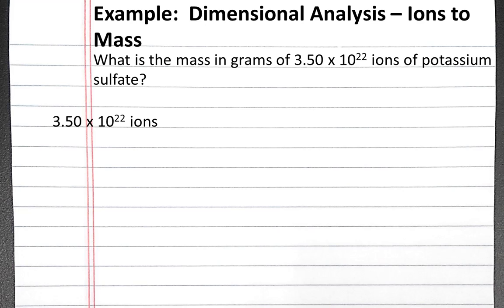First we'll want to convert out of ions into moles of ions. We can do this using Avogadro's number. One mole of ions is 6.022 times 10 to the 23rd ions.